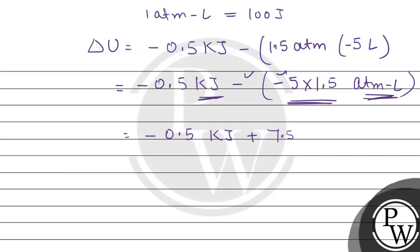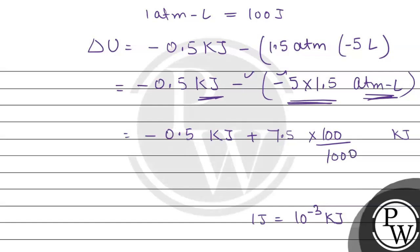Since 1 atmosphere·liter equals 100 joule, we multiply 7.5 by 100 to get 750 joule. Converting to kilojoule: 750 joule equals 0.75 kJ. So we have minus 0.5 kJ plus 0.75 kJ, and since the two minus signs become positive, the result is minus 0.25 kJ.